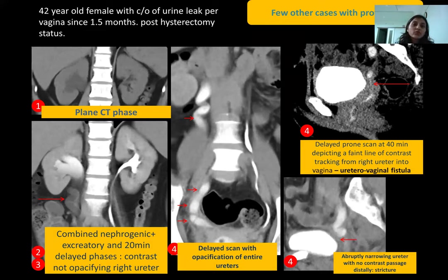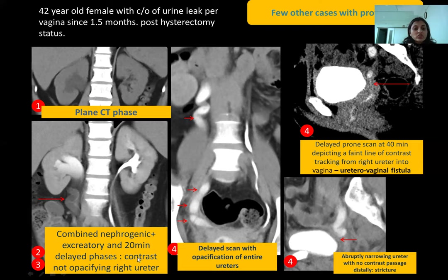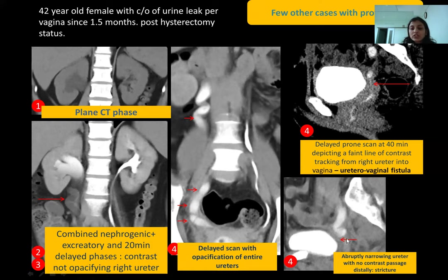Another case: a 42-year-old female complaining of urine leak per vagina since one and a half months post hysterectomy. Figure 1 depicts a plain CT showing hydronephrosis in the right kidney with entire hydroureter. After split bolus contrast administration, a combined nephrogenic and excretory phase was done. Both the combined nephrogenic-excretory phase and 20-minute delayed phases showed the right ureter was not well opacified. Another delayed scan at 40 minutes in prone position showed opacification of the entire right ureter and left ureter, with abrupt narrowing at the ureterovesical junction suggestive of a stricture, and a faint line of contrast tracking from the right ureter into the vagina, suggestive of a ureterovaginal fistula.